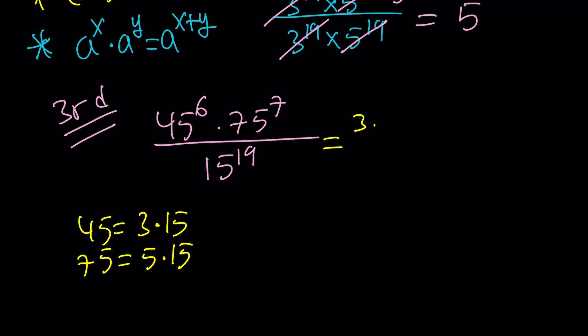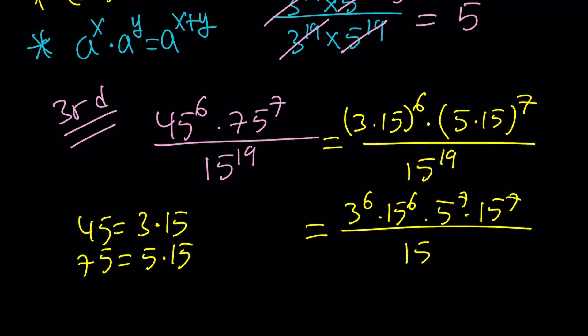45 is going to be written as 3 times 15, but you're going to raise it to the 6th power. And then 75 is going to be 5 times 15, then raise it to the 7th power. And at the bottom we're going to leave that alone. Now we're going to use the same thing, distribute the powers. 3 to the 6th, 15 to the 6th, 5 to the 7th, 15 to the 7th, divided by 15 to the 19th.